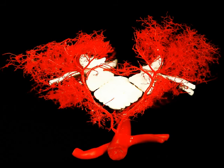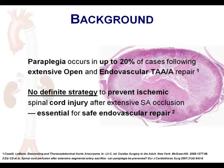Since paraplegia still occurs in up to 20% of cases, new strategies to increase the ischemic tolerance of the spinal cord are critical for both surgical and, in particular, future endovascular repair of descending thoracic and thoracoabdominal aneurysms—especially endovascularly, because segmental artery integrity cannot be preserved in those cases.